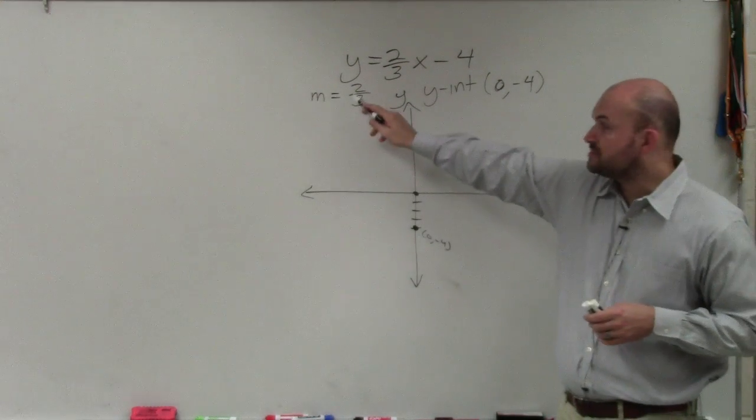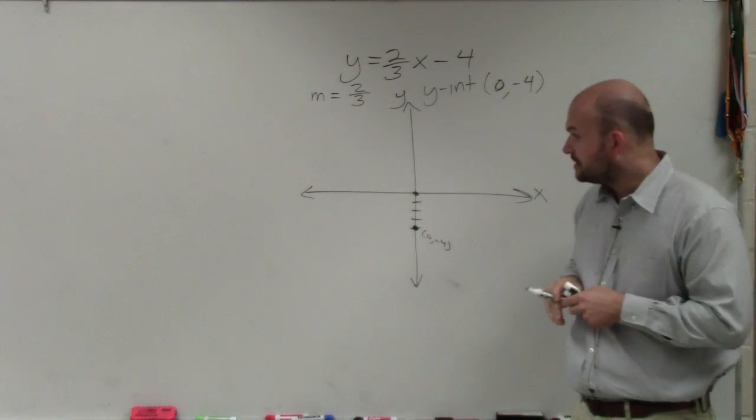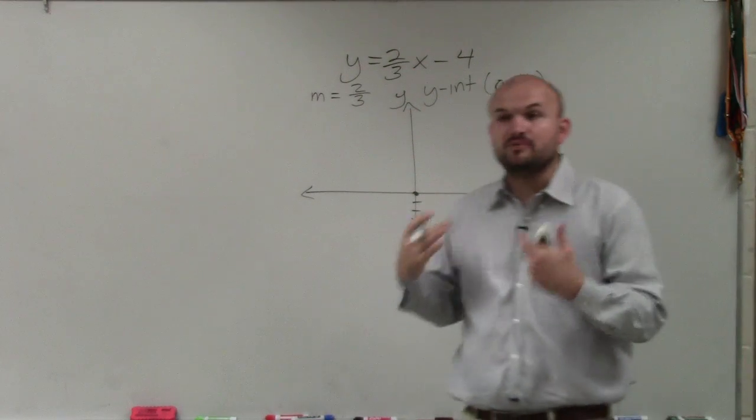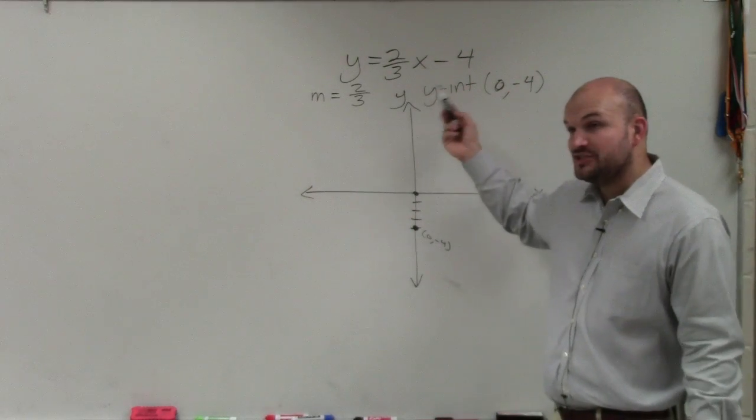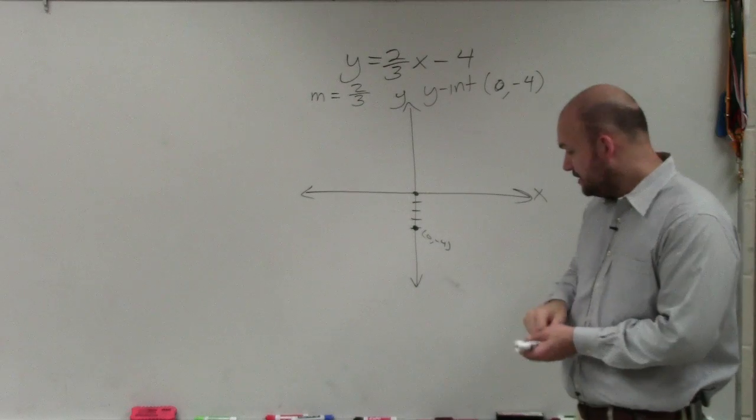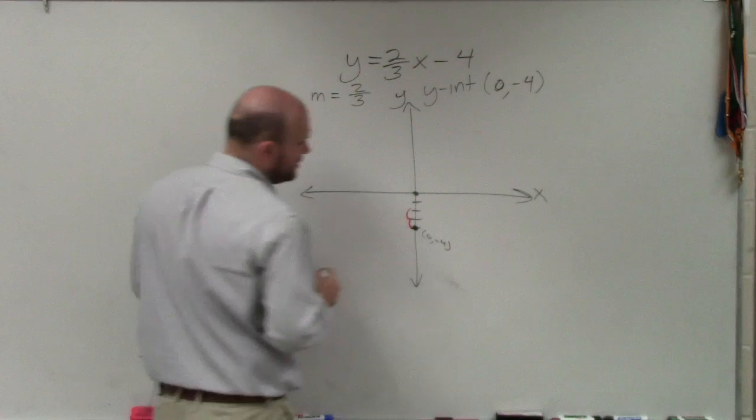Then what we're going to do is we're going to use the slope to find another point. We only need two points to graph a line. So remember, the slope represents a ratio, the change in y over the change in x. The change between any two y values is a positive 2, meaning I can go up two units.